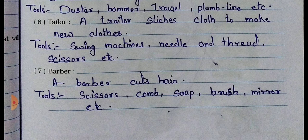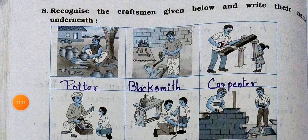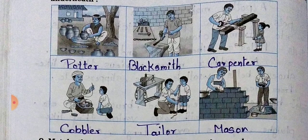Seventh, the barber. A barber cuts hair. Tools: scissor, comb, shaving brush, mirror, etc. Now turn to the next page and see question number eight: Recognize the picture and tell me what this man is doing and who is he. First picture: This man is making a pot, and this man is called a potter.